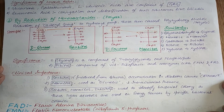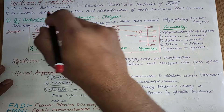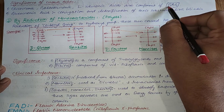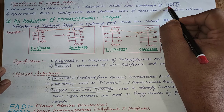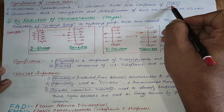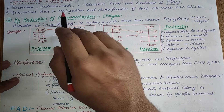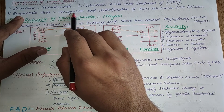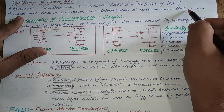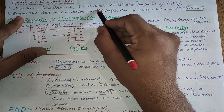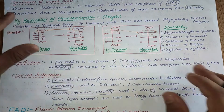The significance of uronic acids: glucuronic and galacturonic acids are components of glycosaminoglycans (GAGs), which are important matrix or cellular substances in different connective tissues and cell membrane components. Additionally, glucuronic acid helps in conjugation and detoxification of toxic substances like bilirubin.